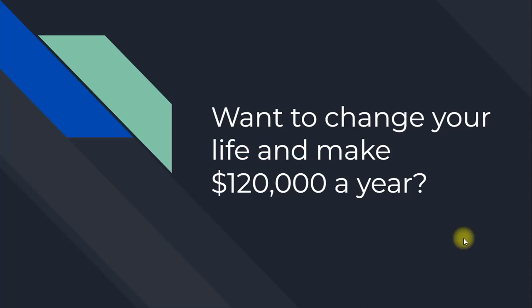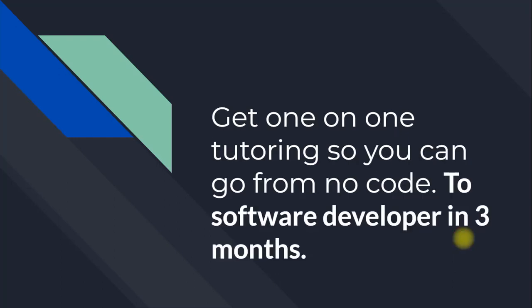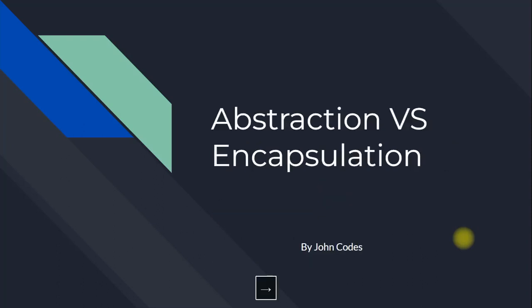Want to change your life and make $120,000 a year? Get one-on-one tutoring so you can go from no-code to software developer in 3 months. Abstraction vs. Encapsulation by John Codes.